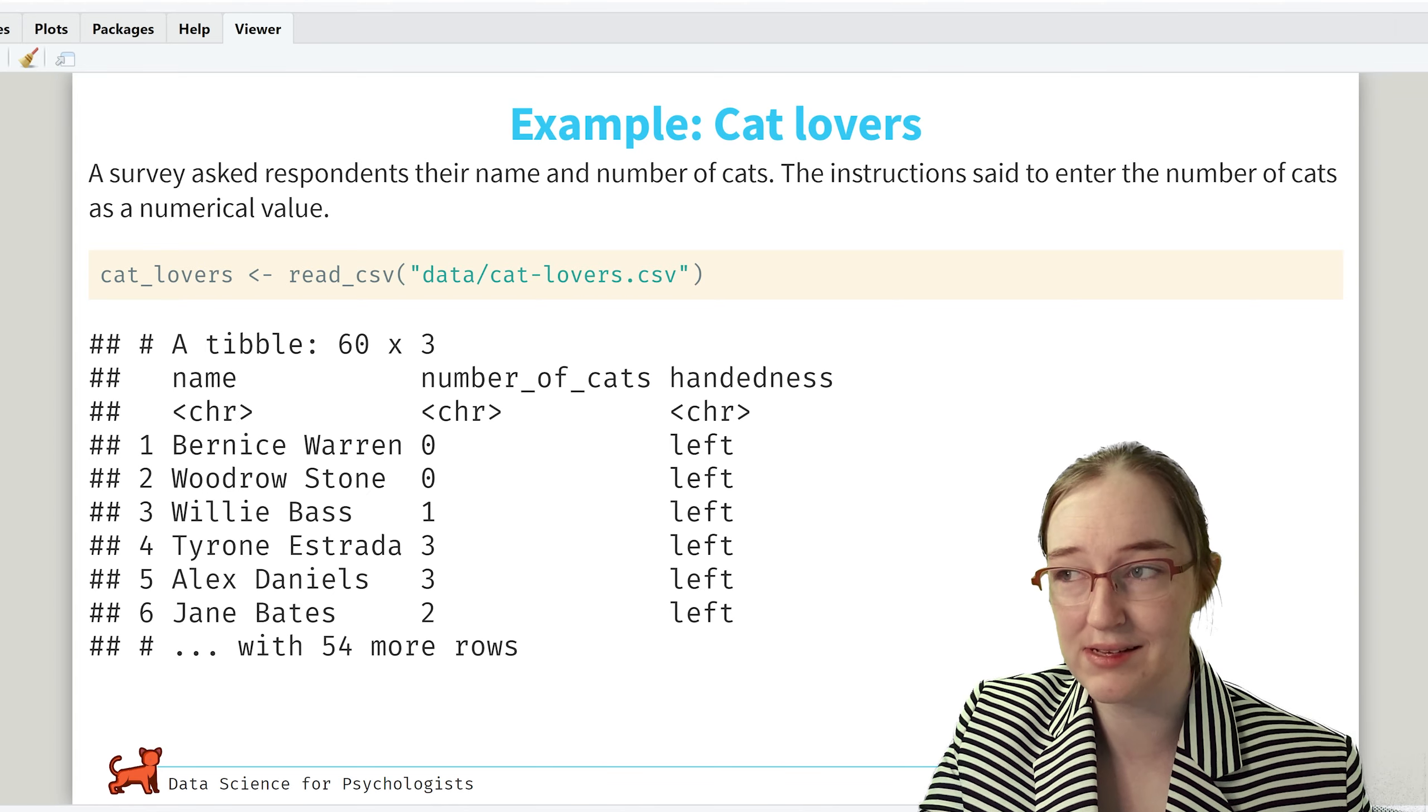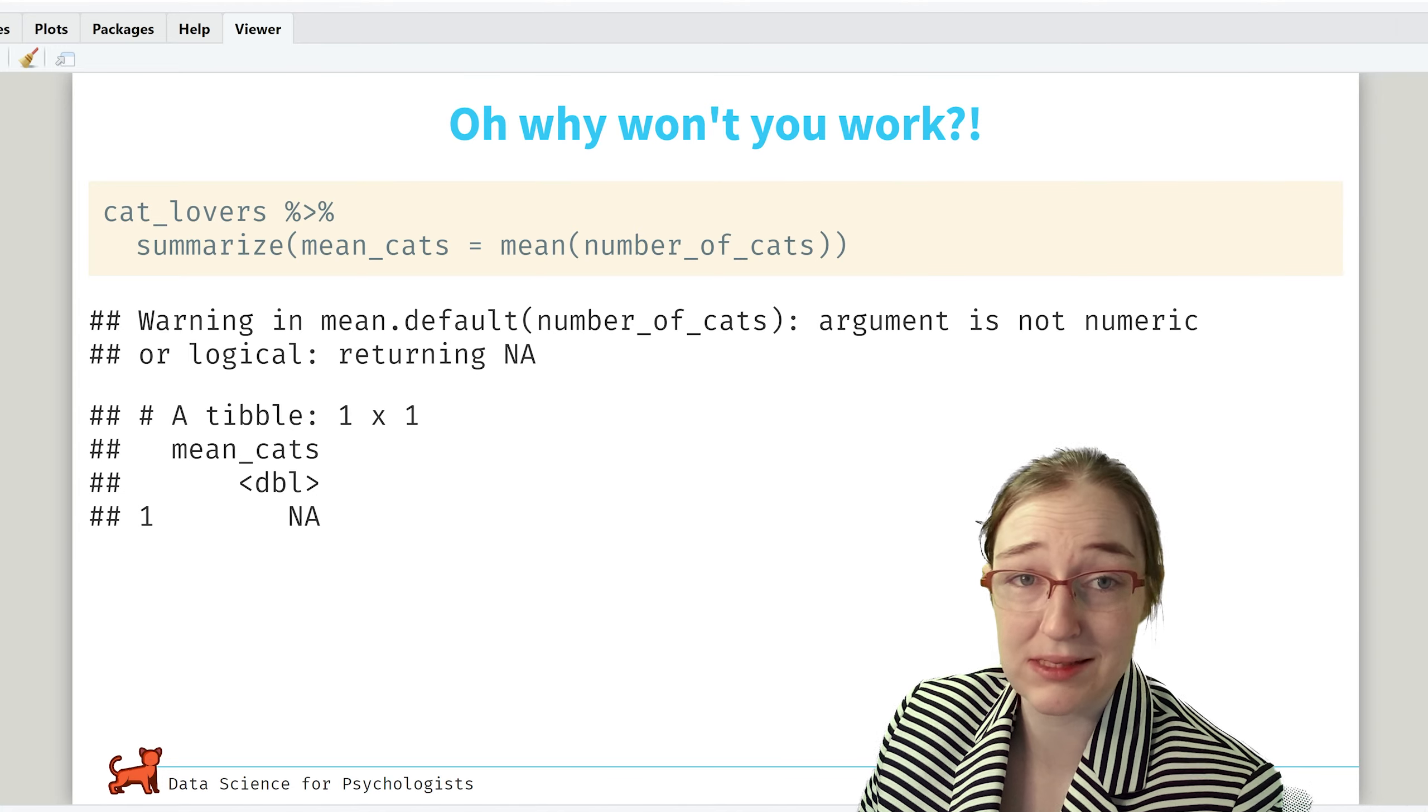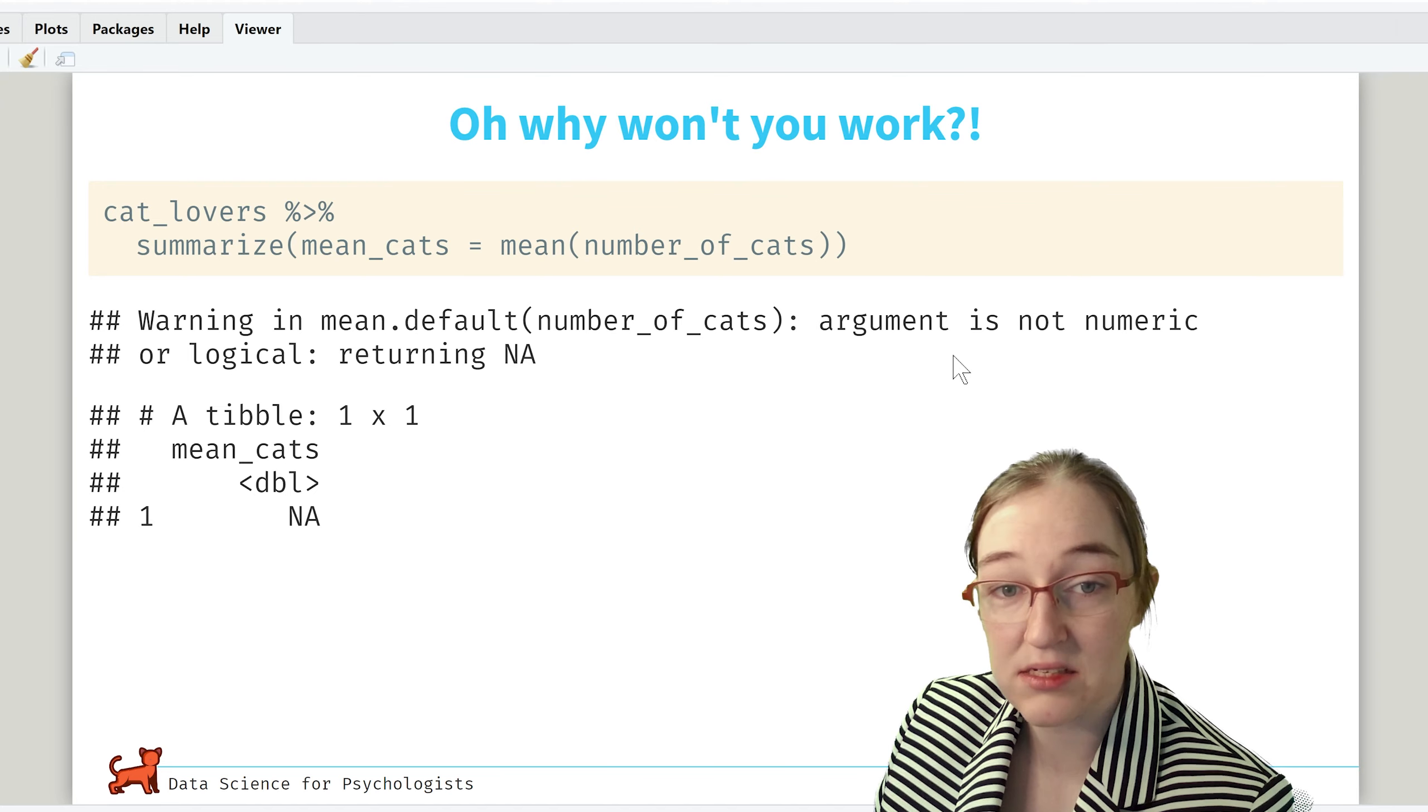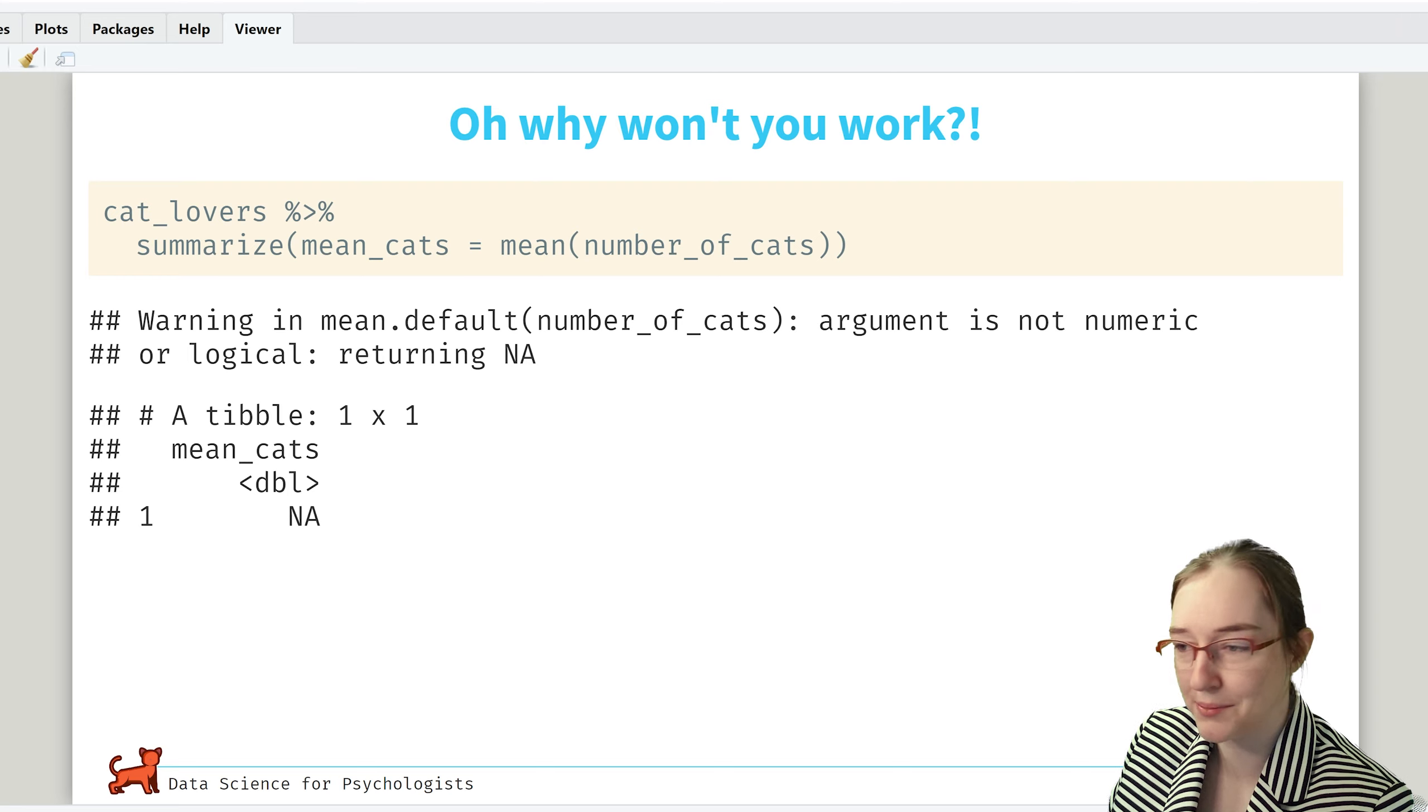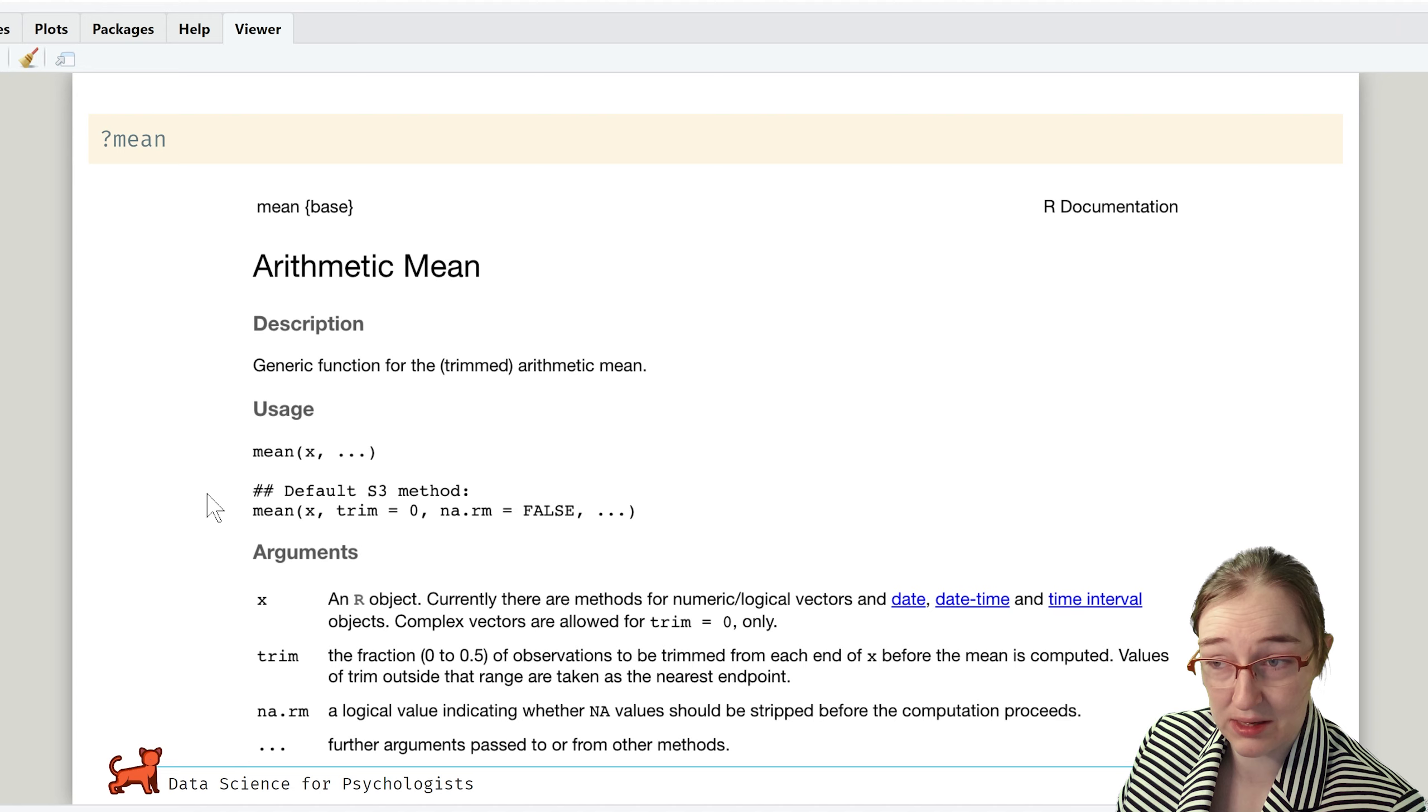Well, when we try and summarize the number of cats, just using a basic summarize function where we create the mean number of cats from the number of cats, we get this warning that says argument is not numeric or logical, returning NA. Not helpful. We wanted a number.